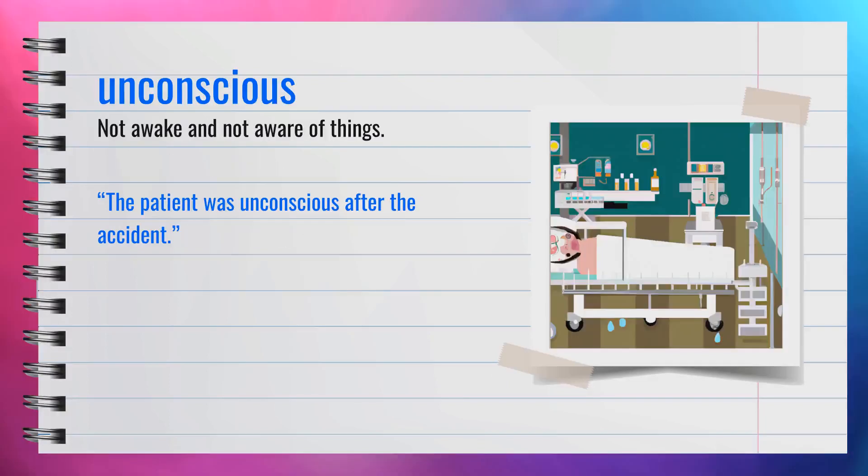The word unconscious, spelled U-N-C-O-N-S-C-I-O-U-S, is an adjective. It means not awake and not aware of things. For example, the patient was unconscious after the accident. Synonyms include insensible and comatose. In summary, if someone is unconscious, they are not awake and unaware of their surroundings.